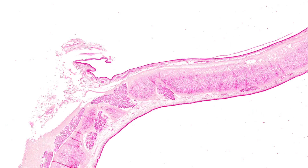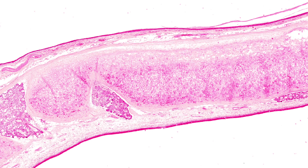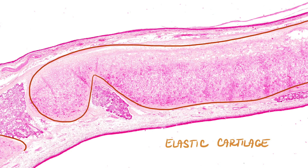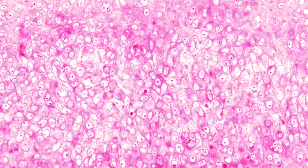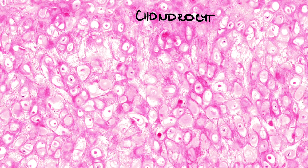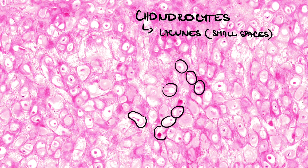Let's start with the center first. Epiglottis contains elastic cartilage in the center. Elastic cartilage is composed of cells and extracellular matrix around them. We can differentiate chondrocytes that are in the center of the cartilage, sitting in lacunae. Lacunae are small spaces in the matrix, like small rooms for cells.